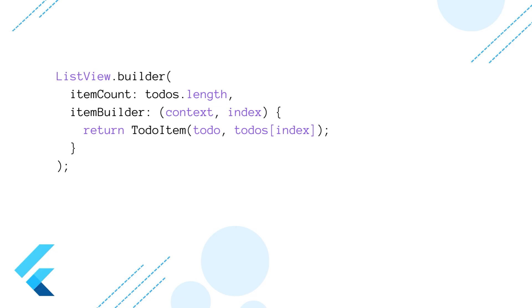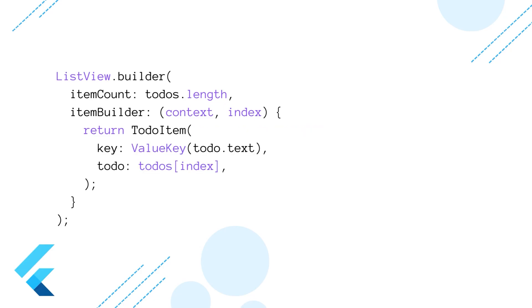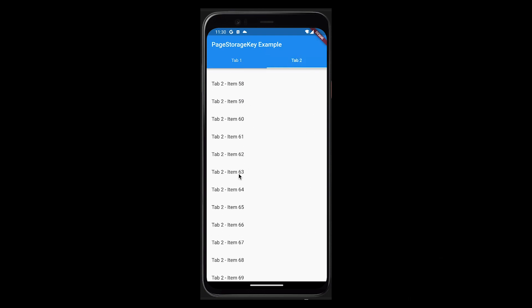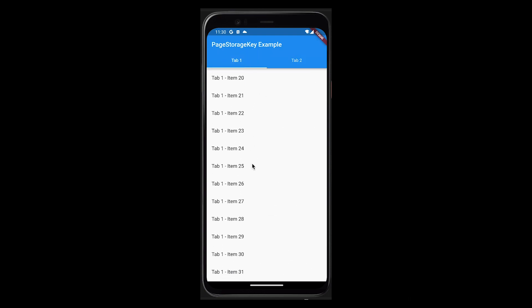ValueKey is useful when the identity of an object is based on an attribute or property rather than memory reference like ObjectKey. For example, in a to-do app where the text of each to-do item must be unique, you can use ValueKey because the text is a value — an attribute of the to-do object. PageStorageKey is a special kind of key used to persist the scroll position of scrollable views like GridView, ListView, CustomScrollView, etc.